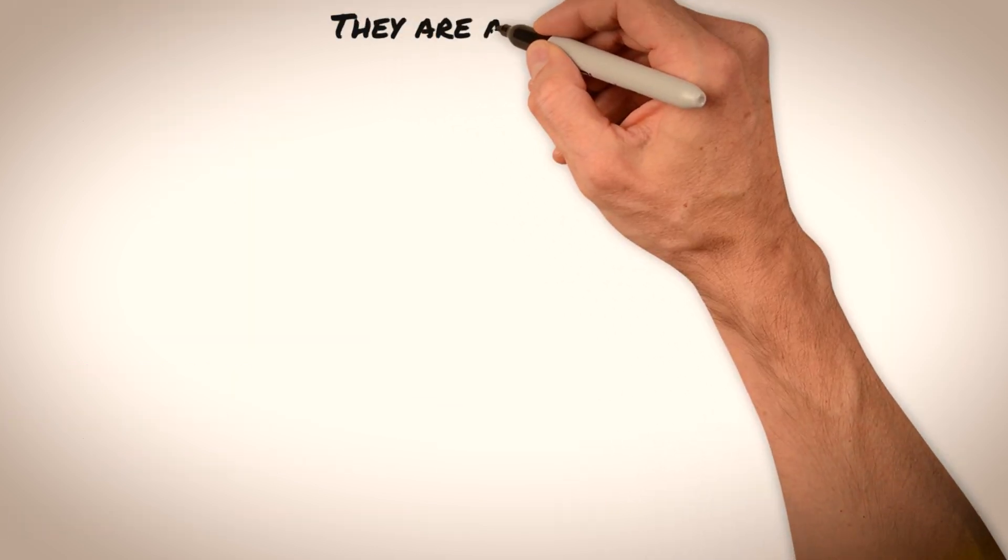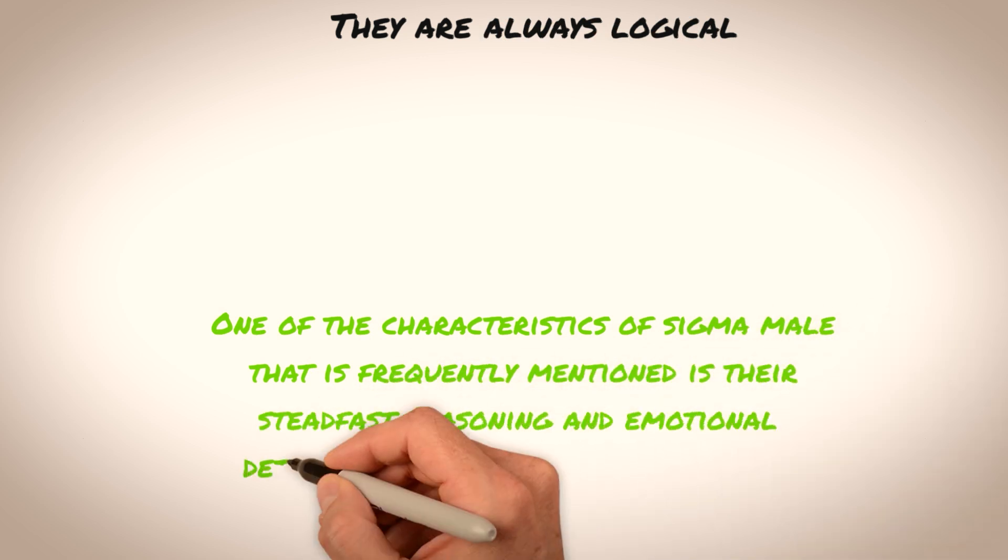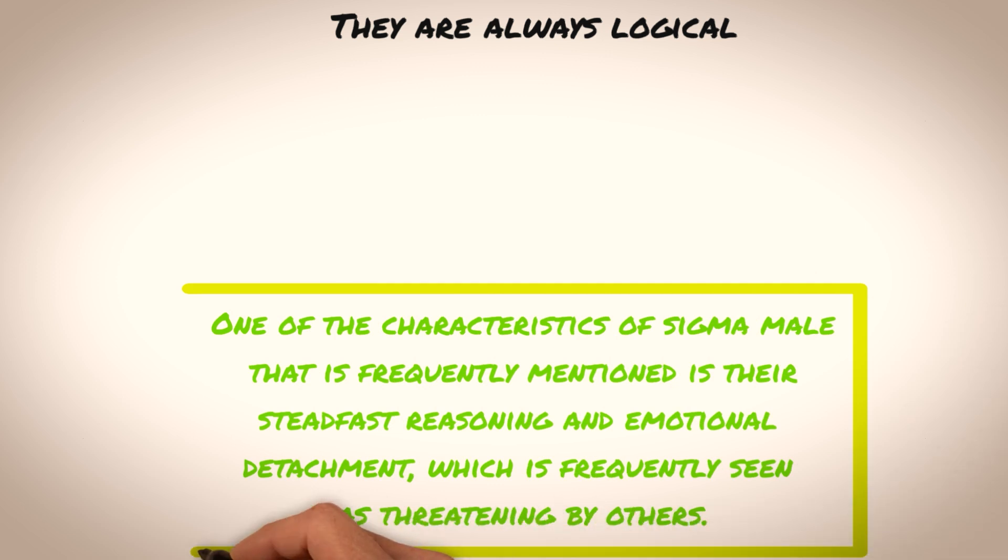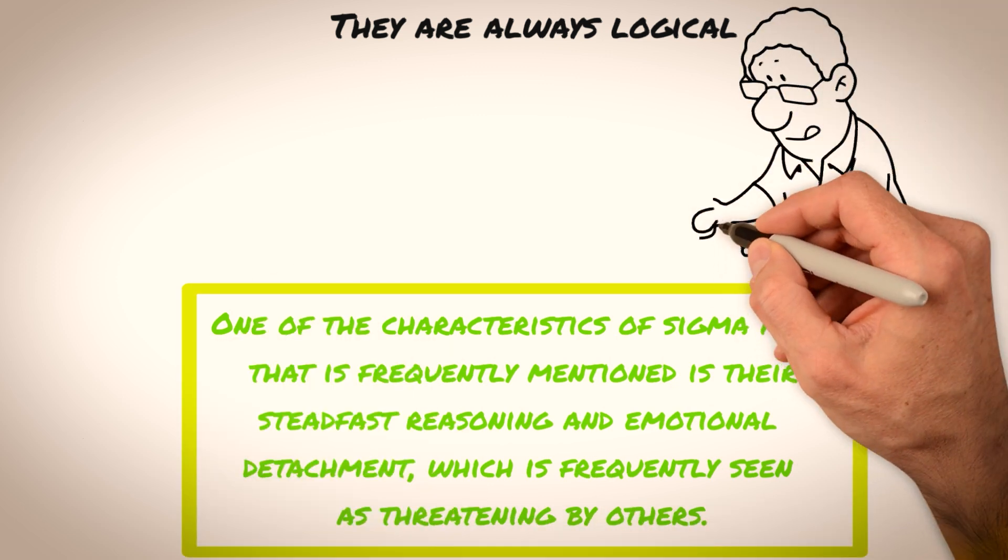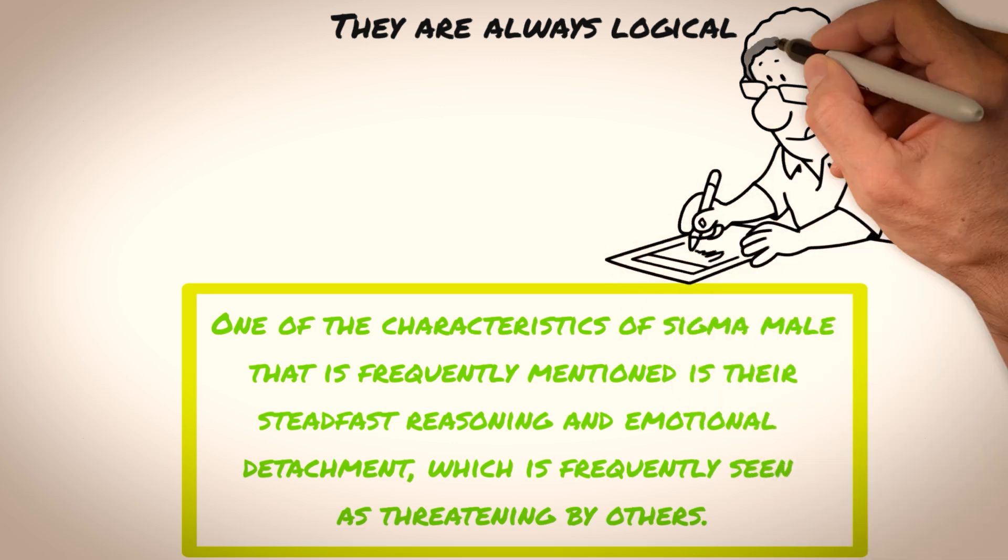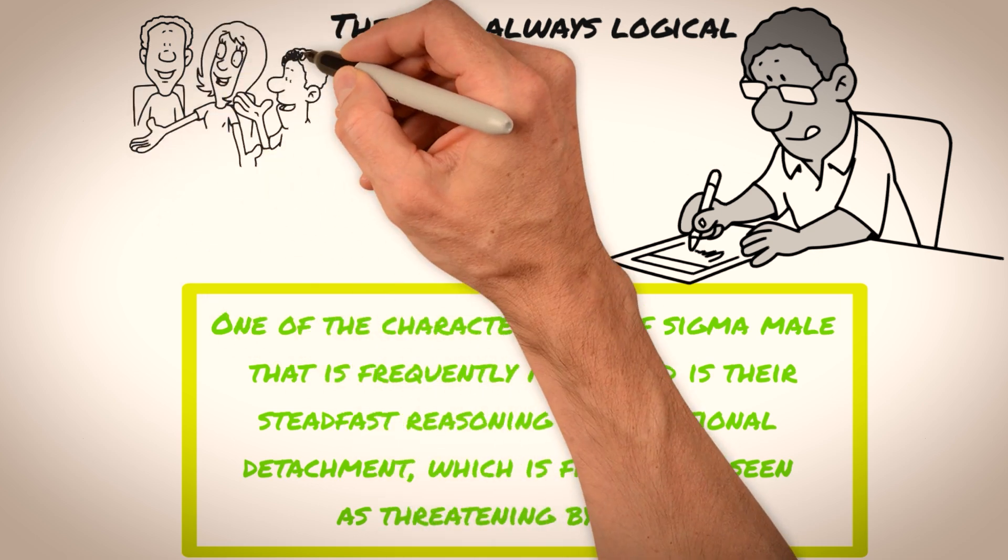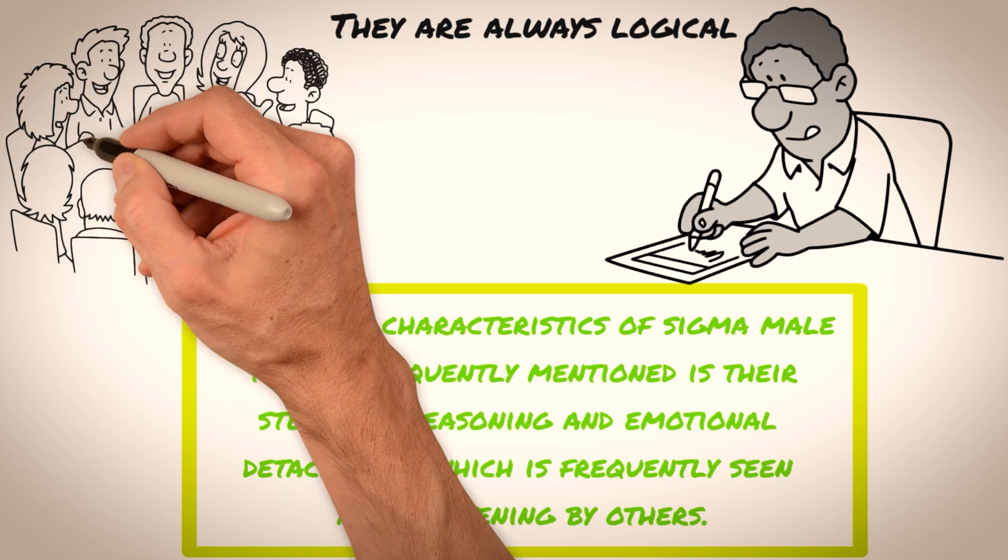They are always logical. One of the most commonly cited traits of Sigma males is their unwavering logic and emotional detachment, which is often perceived as intimidating to others. Sigma males are known for their ability to detach themselves from their emotions and make decisions based solely on logic and reason. They are not swayed by popular opinion, social pressure, or emotional manipulation, which gives them an air of independence and self-sufficiency.